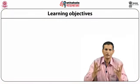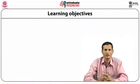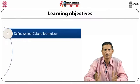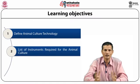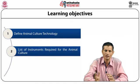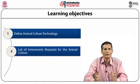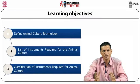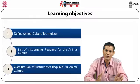Today we are going to discuss the three objectives of this module: what is animal cell culture technology, what is the list of instruments required for animal cell culture technology, and a brief classification of these instruments which are utilized for animal cell culture technology.